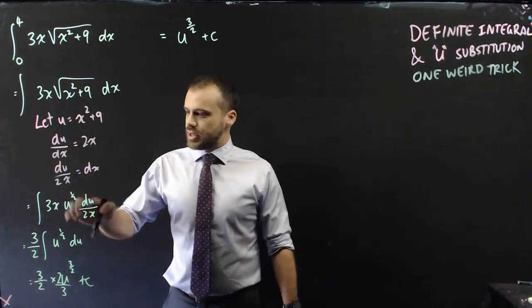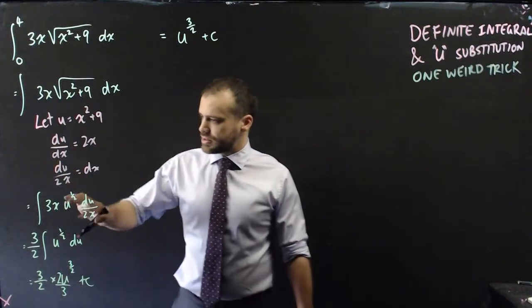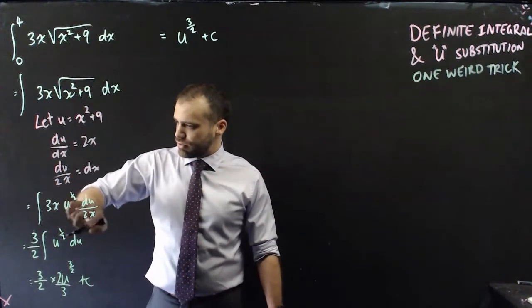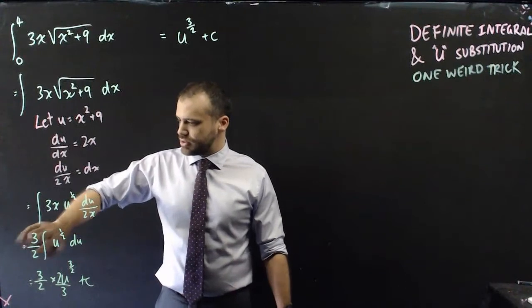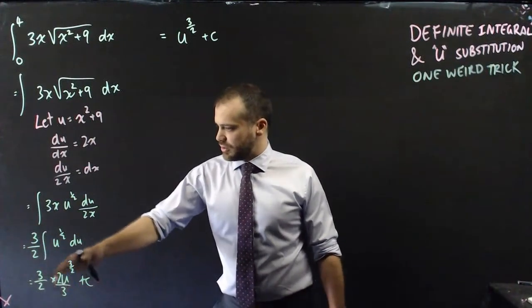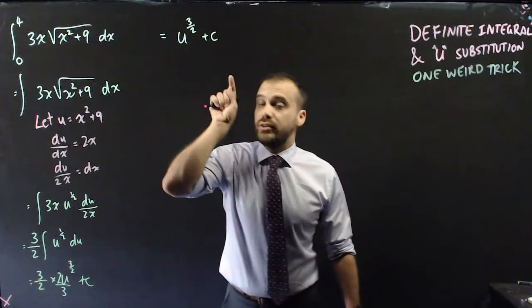And then we subbed in our u, and we subbed in that for dx, moved 3 over 2 out the front, integrated, and then those 3 over 2 and that 2 over 3 cancelled out, and we got that.